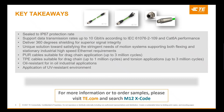The M12 Xcoded overmolded cord set series contains male straight and right-angle connectors. CAT 6A cable jackets vary between PVC, PUR, and TPE, which offer a unique solution toward satisfying the stringent needs of motion systems and supporting both flexing and stationary industrial high-speed Ethernet environments.